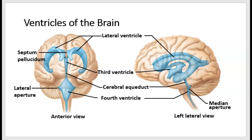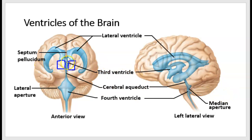Both of these lateral ventricles connect to the third ventricle. The third ventricle is narrow and lies at the midline between two halves of a structure known as the thalamus, so on either side of this third ventricle there will be thalamus tissue. The thalamus tissue is continuous left and right — there's a mass of tissue that crosses the third ventricle, the space between the two halves of the thalamus, and that's why you see a hole there.